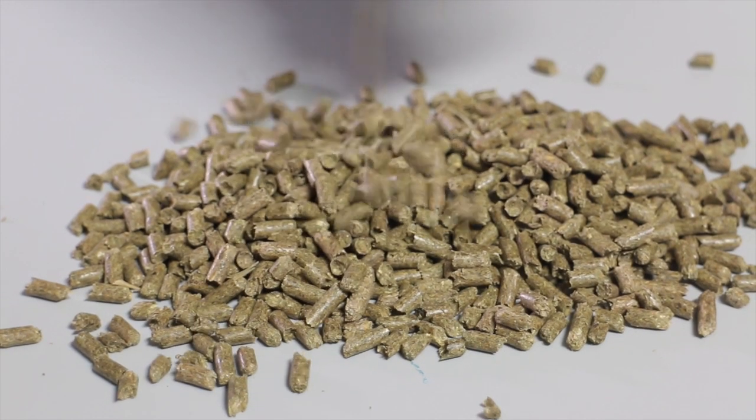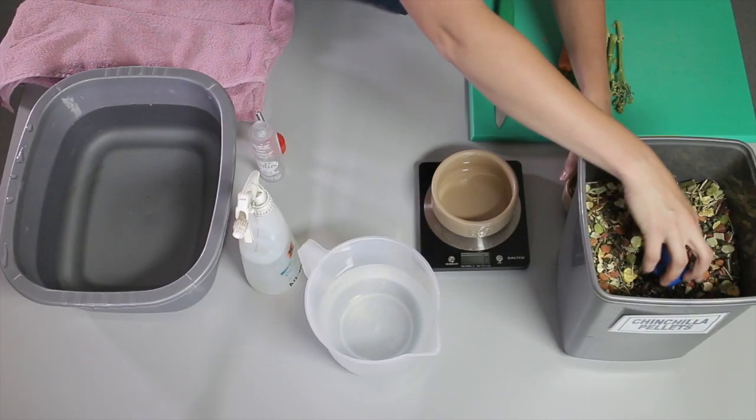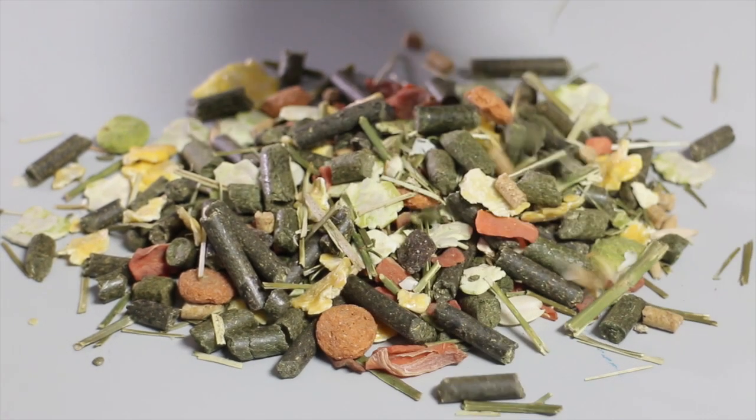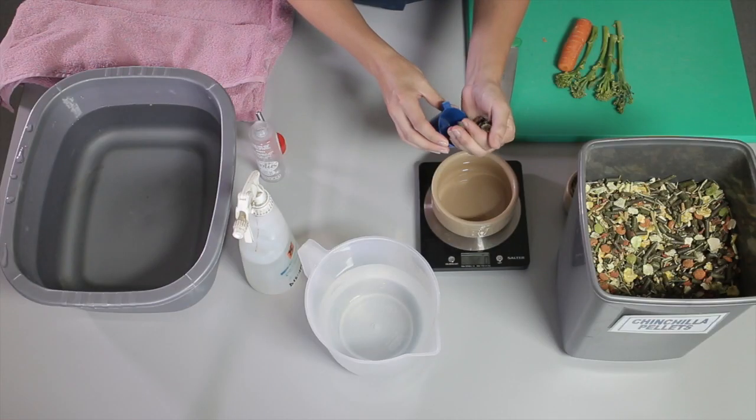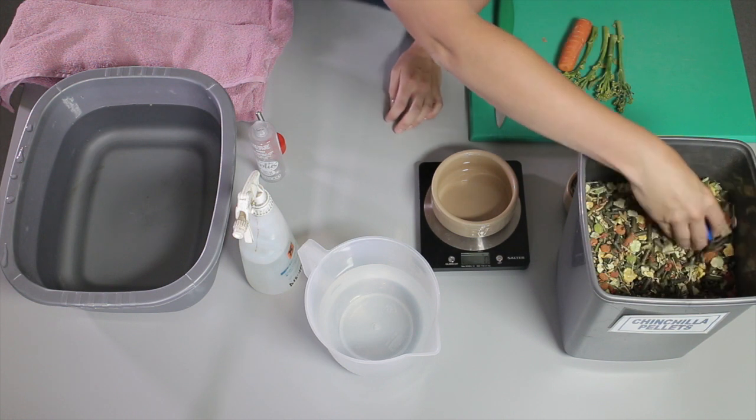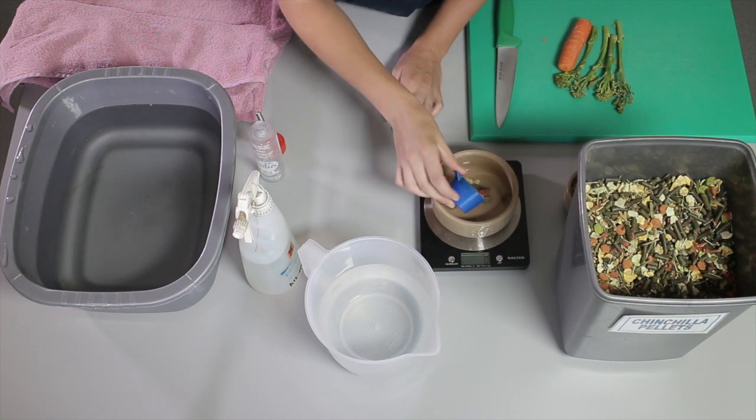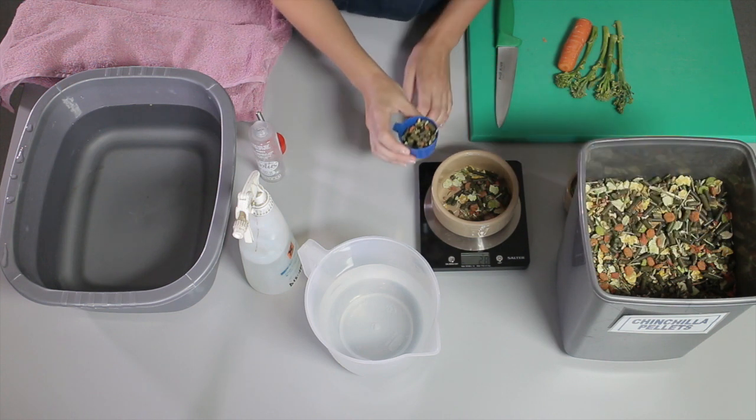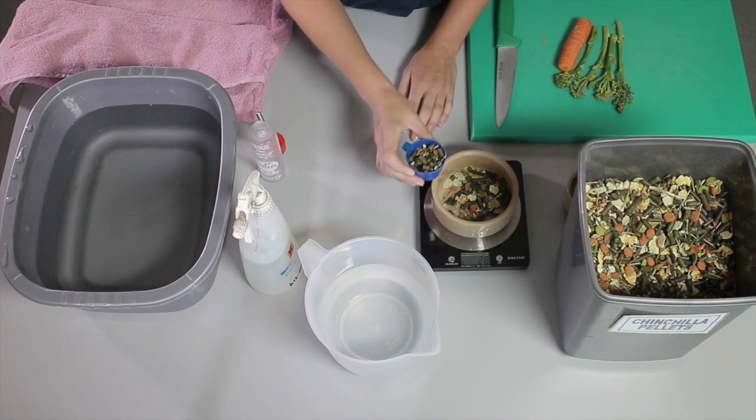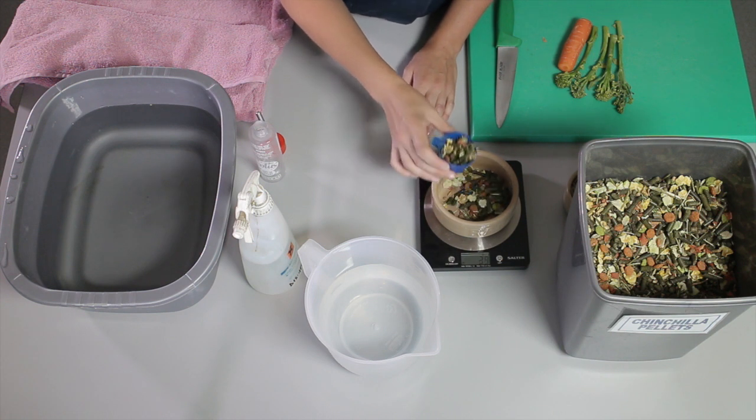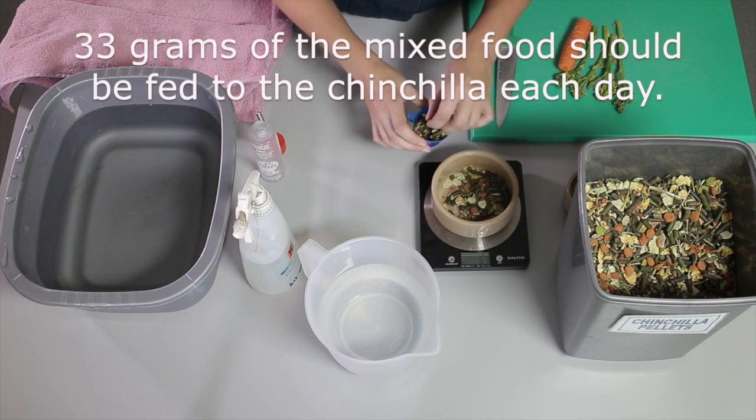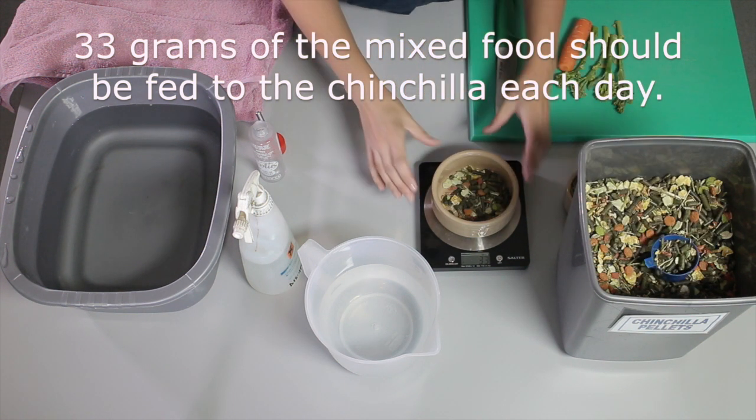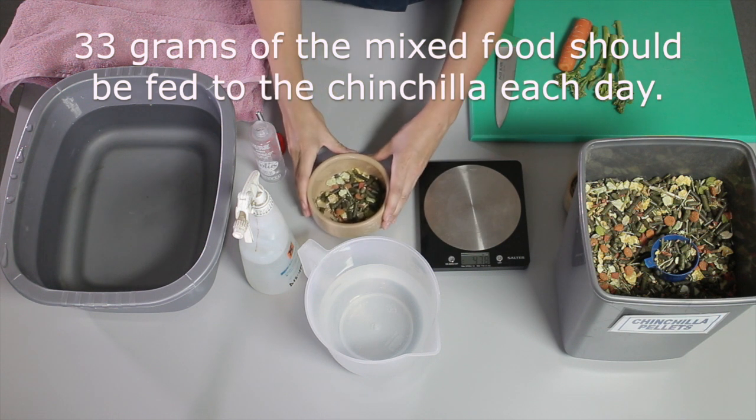One is a pellet form and the other is a mix form. Both of these are complete diets. It's just a preference of which you prefer to use. In this case, I'm going to feed the mix. The recommended guidelines say that 33 grams should be fed to the chinchilla each day. So that's what we need to feed in the dry food.